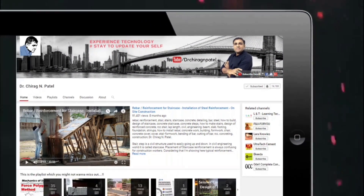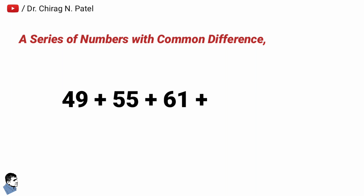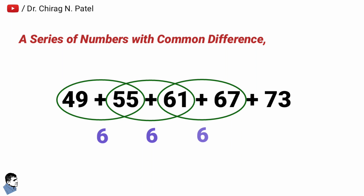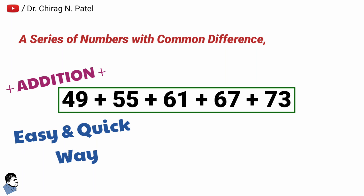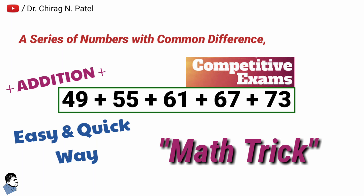Subscribe to this channel and press the bell icon to get notifications for the latest and informative videos. A series of numbers with a common difference, like 49 + 55 + 61 + 67 + 73, has a difference of 6 between each term. By using math tricks, you can solve this type of puzzle in competitive examinations quickly without wasting much time. Let's learn something till the end.